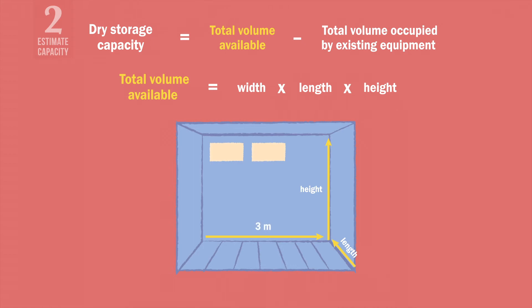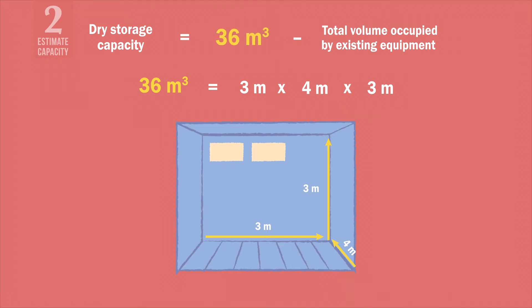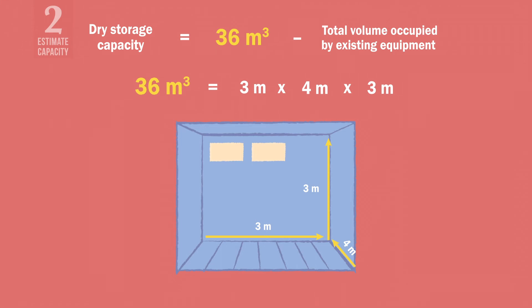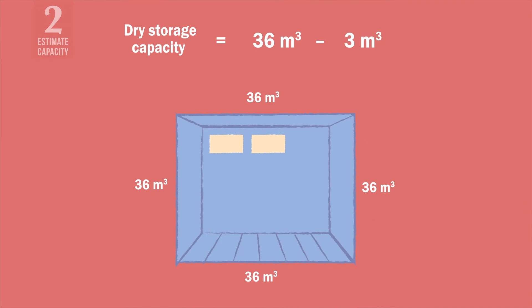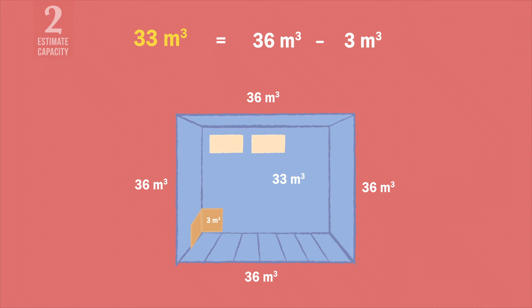If your room is 3 meters wide by 4 meters long by 3 meters high, multiply these dimensions to get a total storage volume of 36 cubic meters. If you have multiple storage facilities, repeat this calculation for each location to get the total storage capacity. Then, estimate how much of the total volume is occupied by existing equipment and subtract this from the total capacity. If your existing safe injection equipment already occupies 3 cubic meters in the storeroom, you have 33 cubic meters of available space. To determine if you have adequate space for a new shipment, compare the storage requirements to your current dry storage capacity. If you have ordered 15 cubic meters of equipment, that is less than the dry storage capacity, so you will have adequate room.